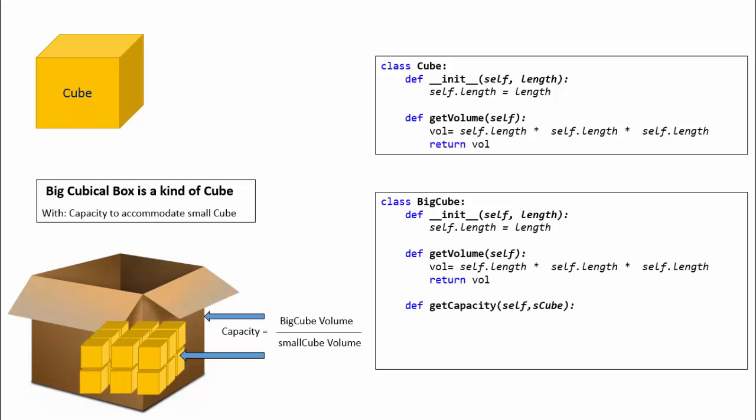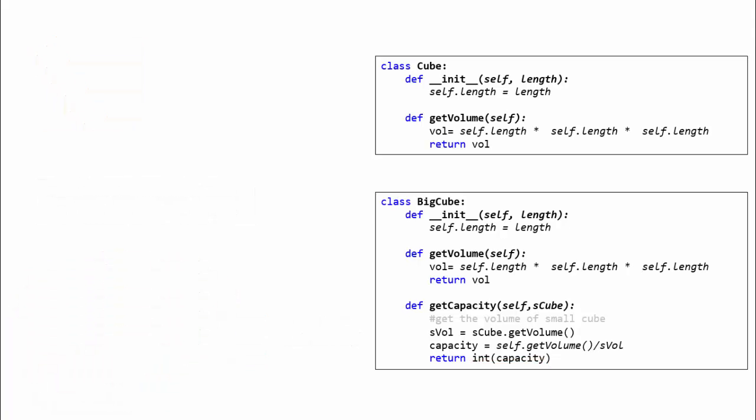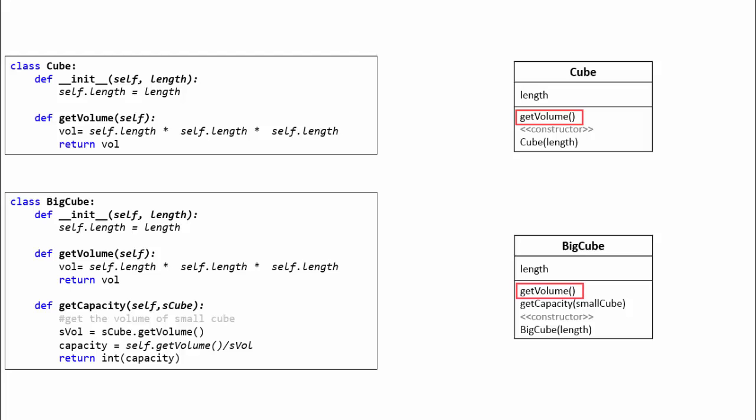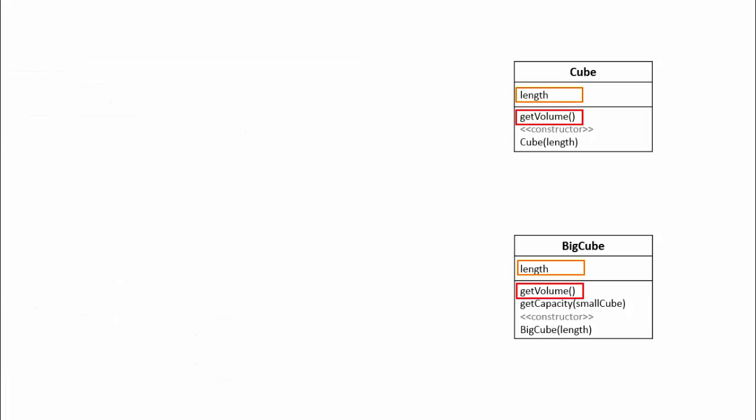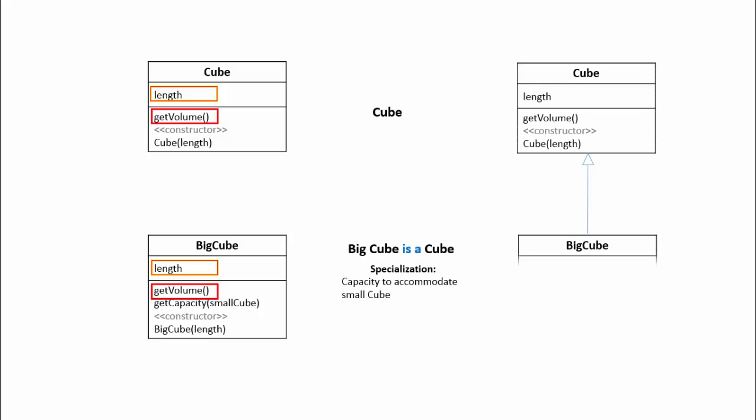The capacity of the cube can be calculated by dividing big cube volume by small cube volume. Let us model this big cube in a python class. The initializer and get volume method will be same as cube class. However, it will have one additional method called get capacity. For capacity calculation, we need volume of small cube. So object reference of small cube is needed as input parameter for this method. Big cube knows its volume. The division formula may result in fraction. So let us convert that into int before returning the result. Let us analyze these classes. The get volume method and length are common to both the classes. Hence, second time declaration is redundant.